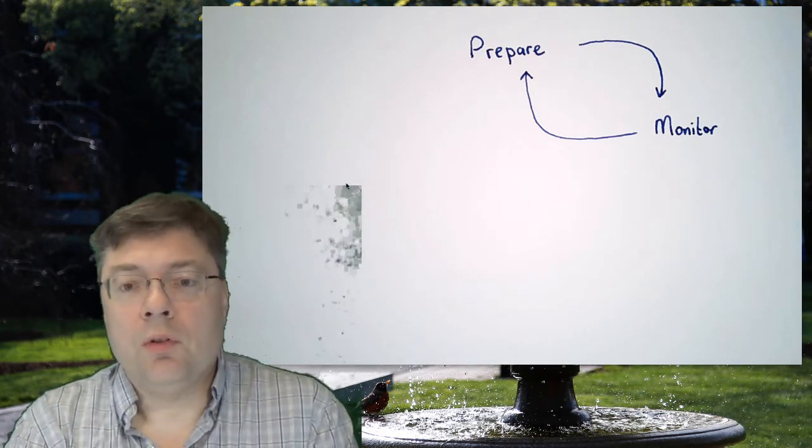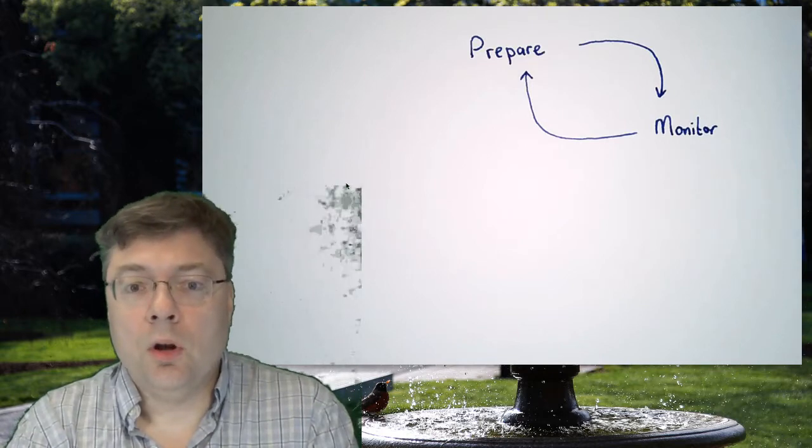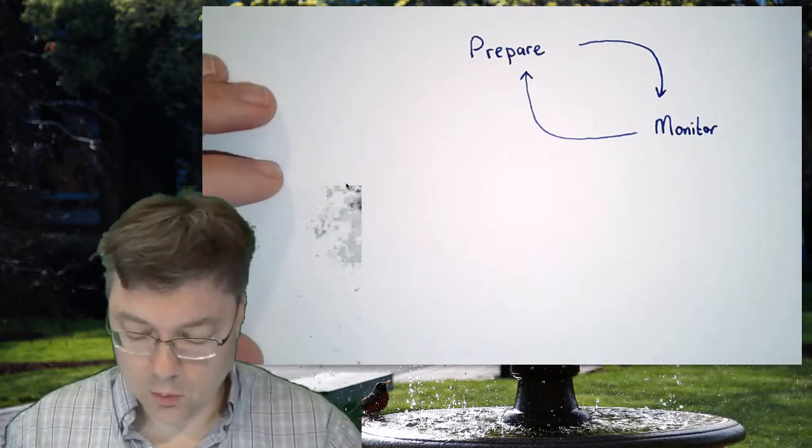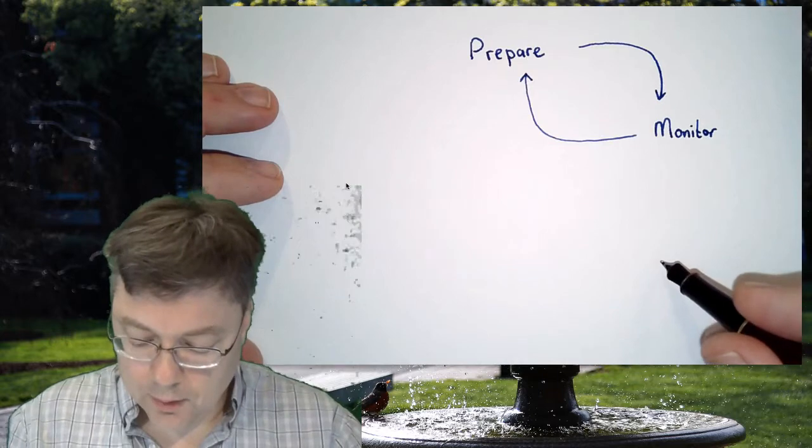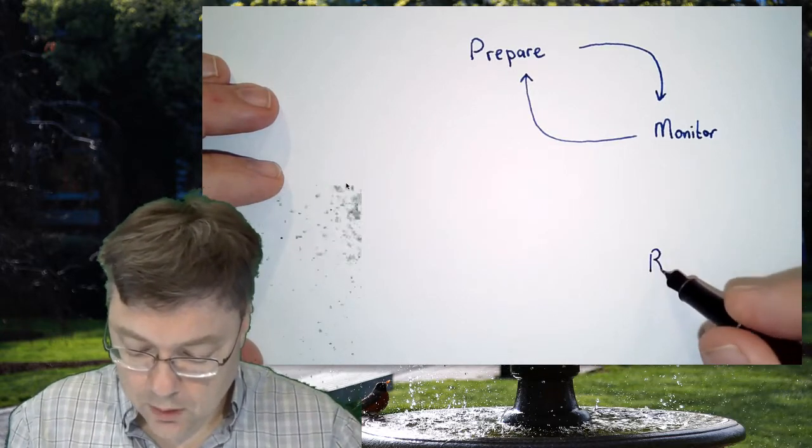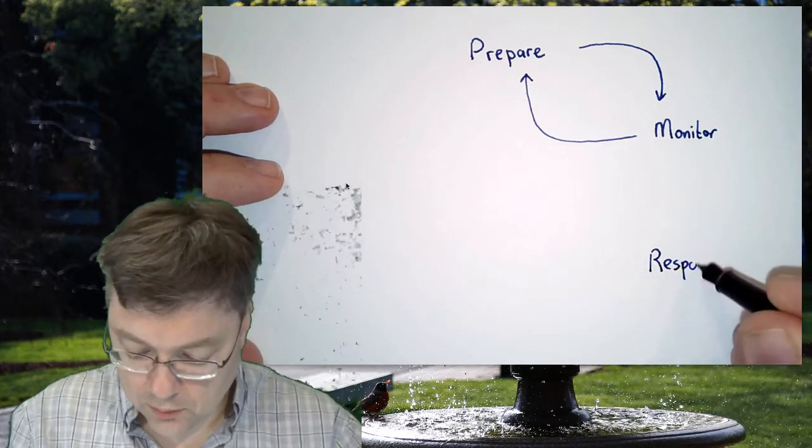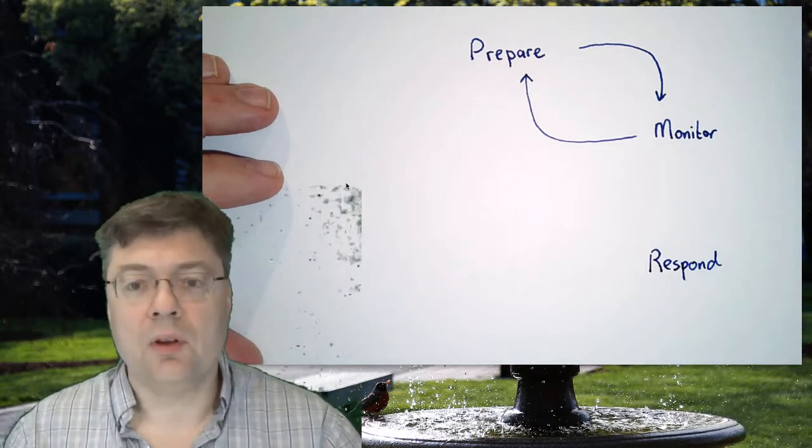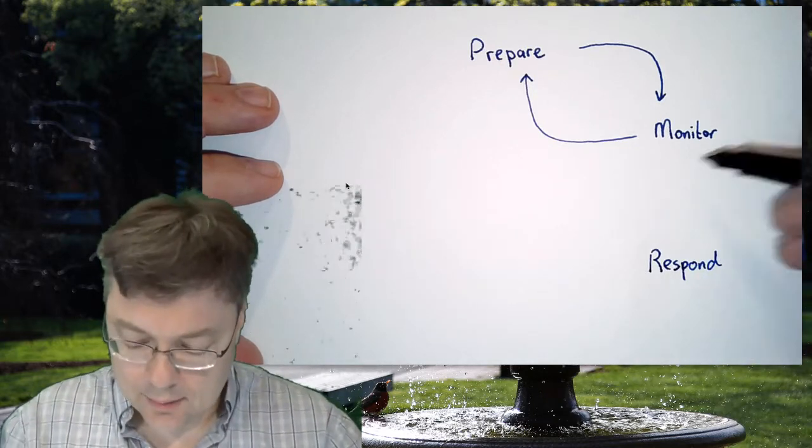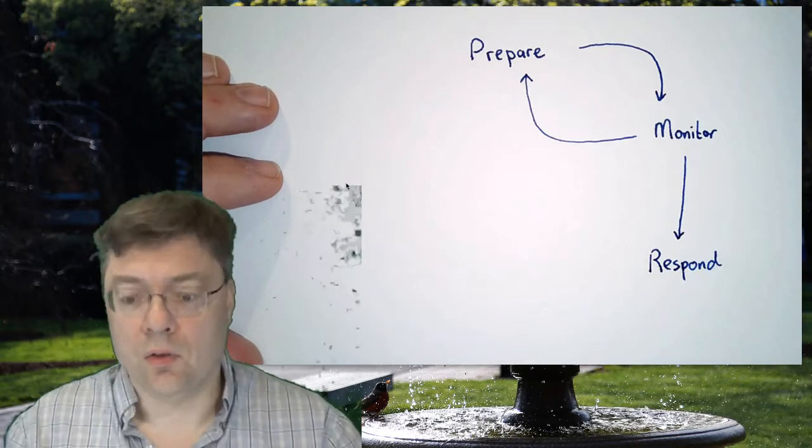Of course we can only look for the things that we know. So an unknown might always be an issue. But at some point we'll have to respond to something. That we noticed something that was out of the ordinary and that didn't actually do what we needed to do.